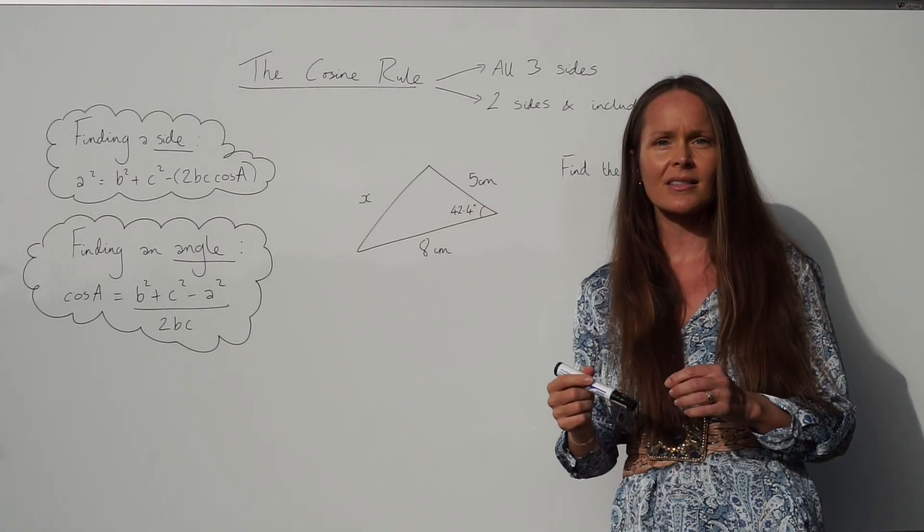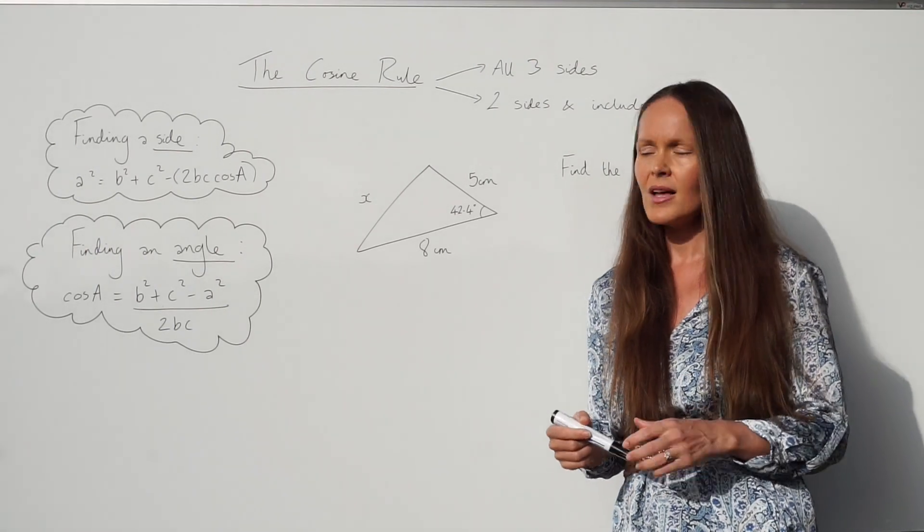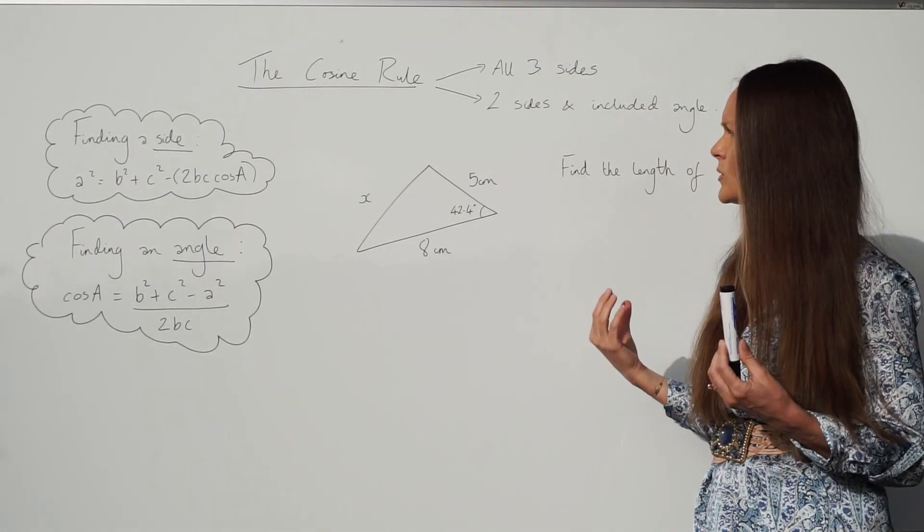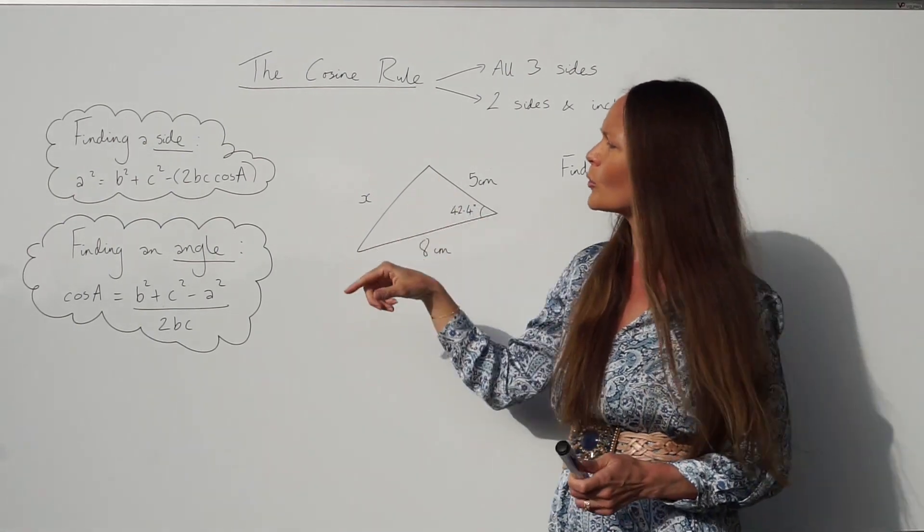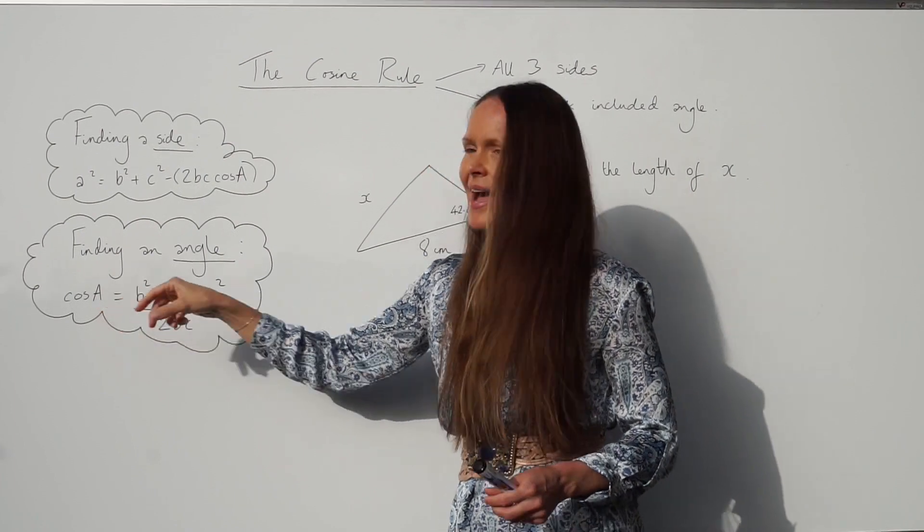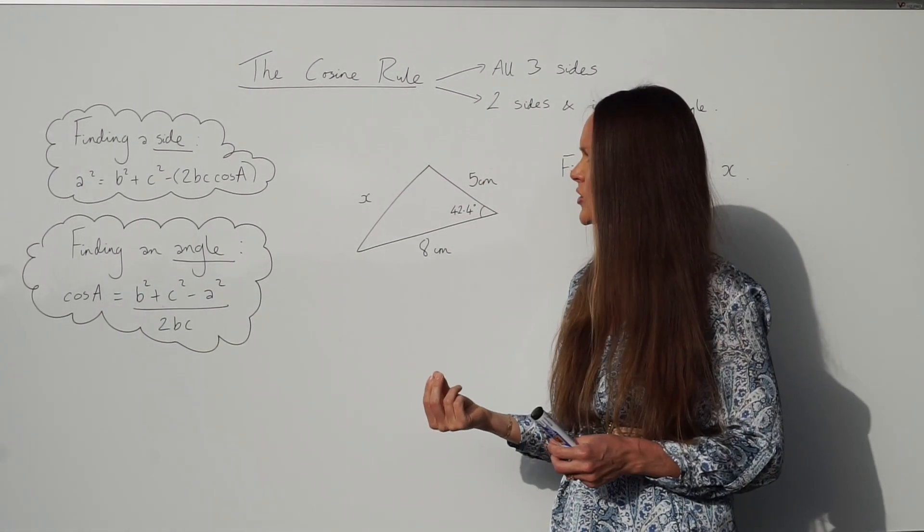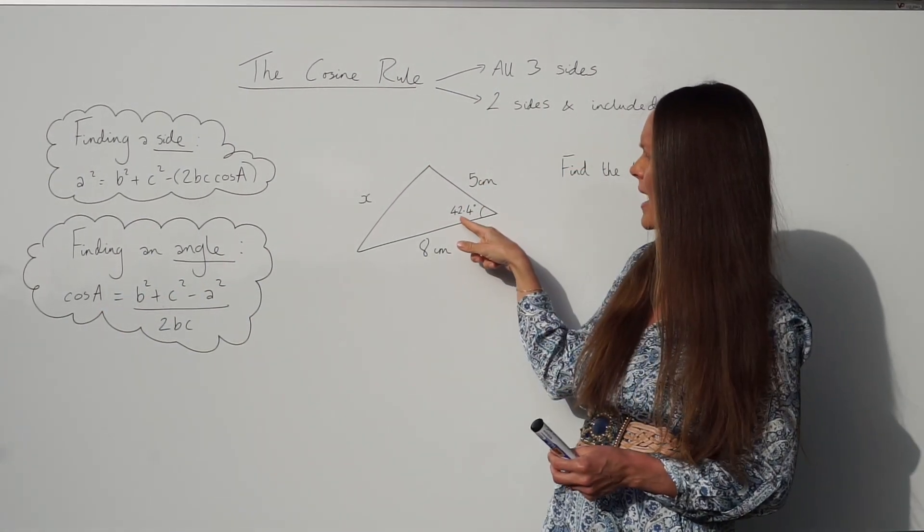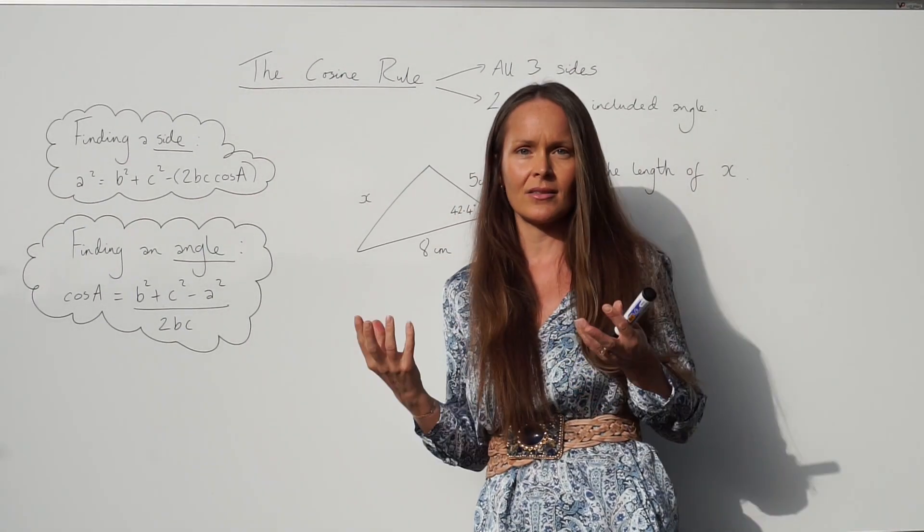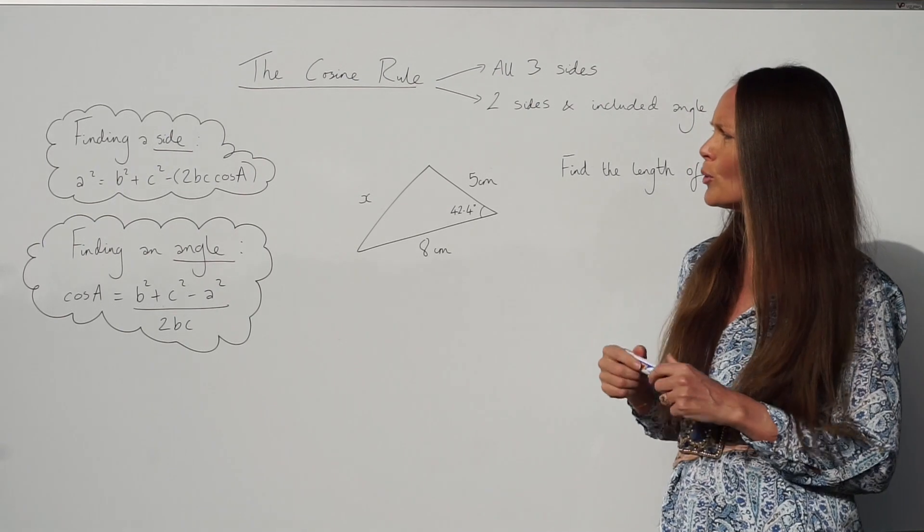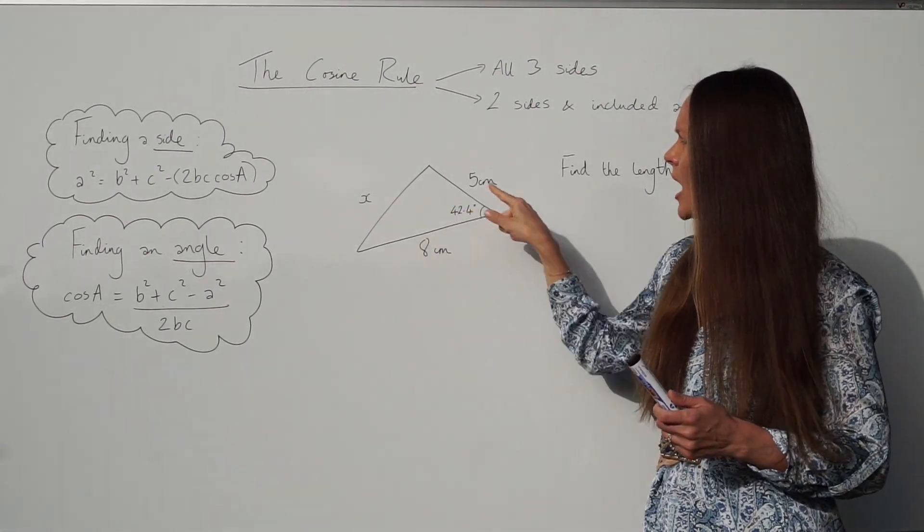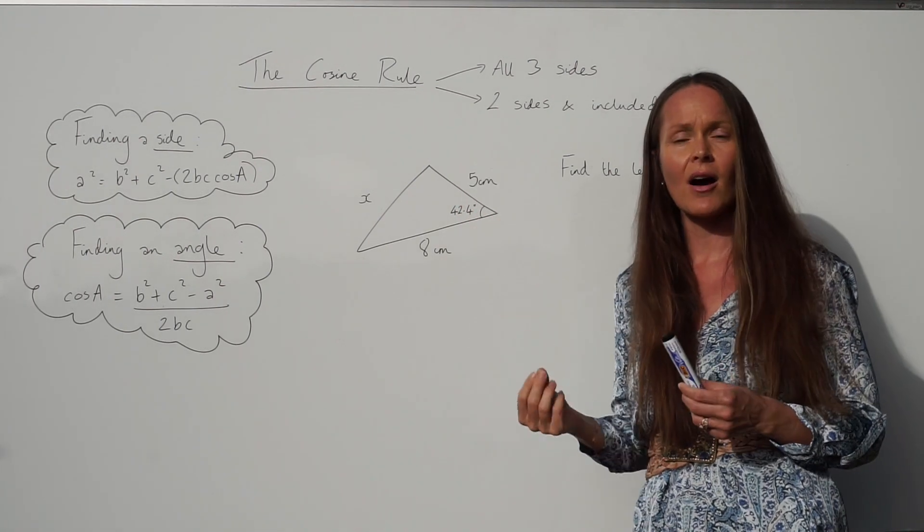The first thing you should do is start by labeling your triangle. So label the sides A, B and C and your angle with capital A. Okay, so if you look back at the formula, can you see there's one capital letter A? That's the angle that you're using in the question. Okay, so in this case this would be angle capital A, and A, B and C are the lengths of the sides. And it's important that you remember the angle and the side that are opposite each other are both A.